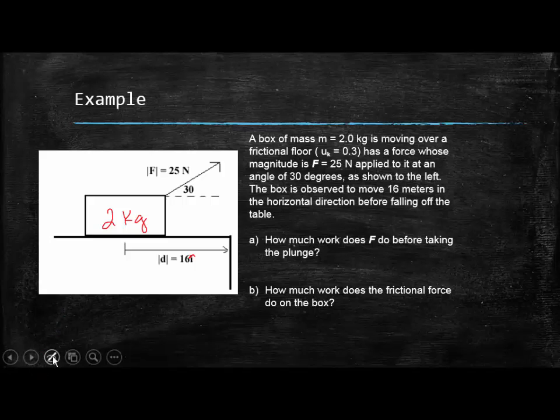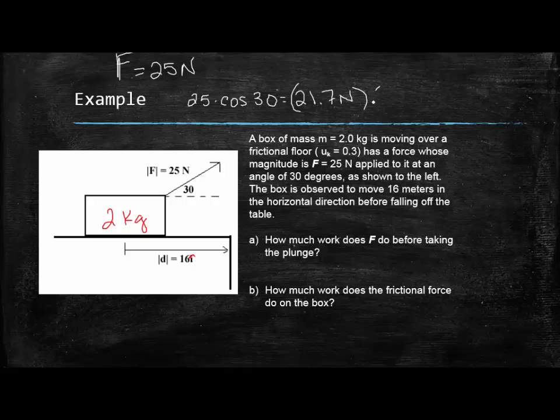Our force is 25 newtons. But remember, all we want is the horizontal component of that force. Because the force and the distance it's traveling have to be going parallel to one another. So I'm going to do 25 times cosine 30, and then I'm going to take that answer and multiply it by the distance that I traveled. So in this case it's 21.7 newtons. We're going to multiply that by 16 to get the total work done on the box by this force, which is 336 joules.